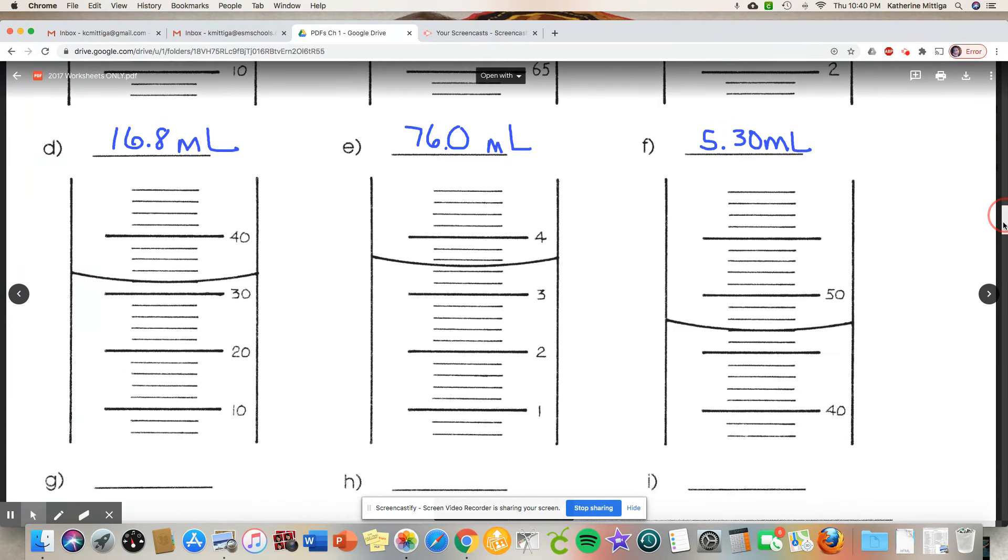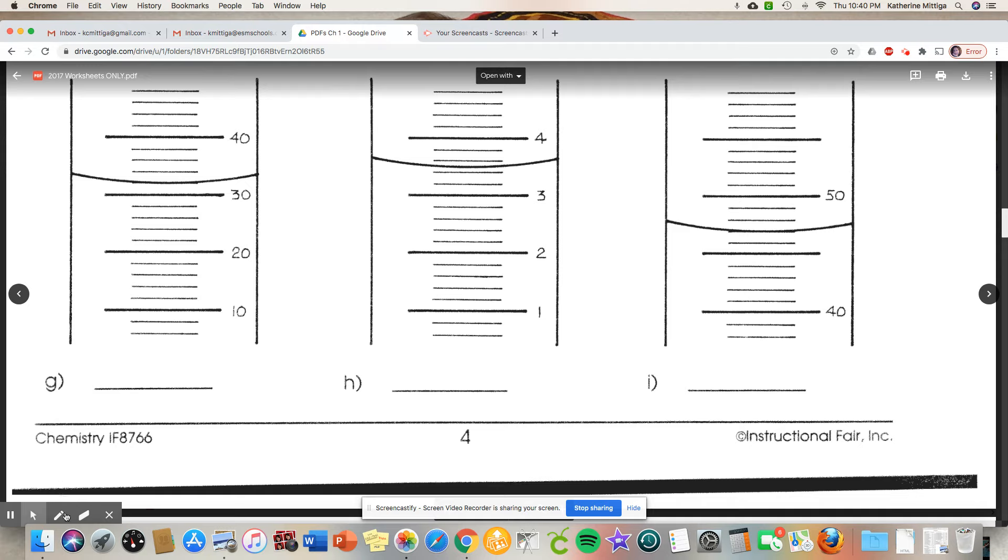So we have, looks like each of these are going by twos, two milliliters, so thirty two, but we have to estimate one beyond: point zero. The next one these are going by point twos, so three point two, three point four, three point six, three point eight. So three point two five.